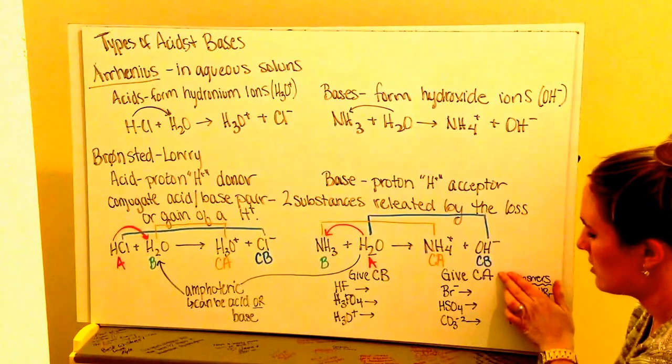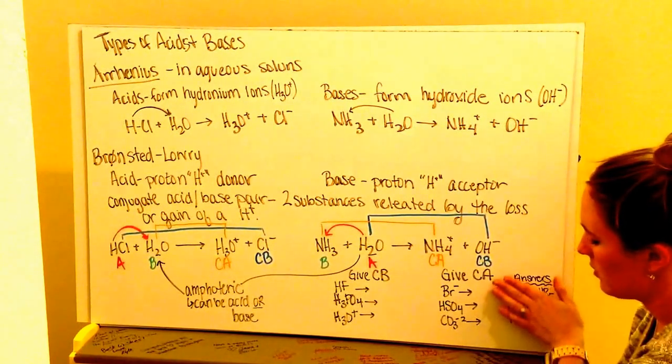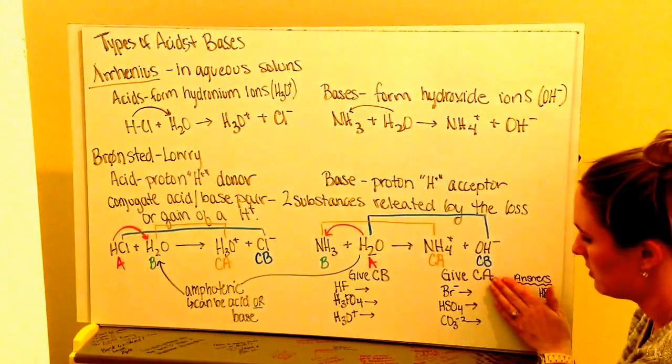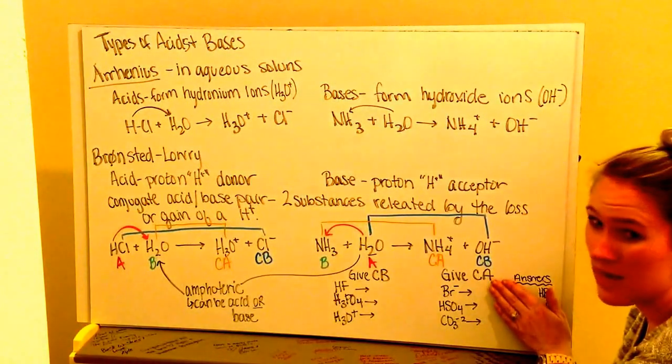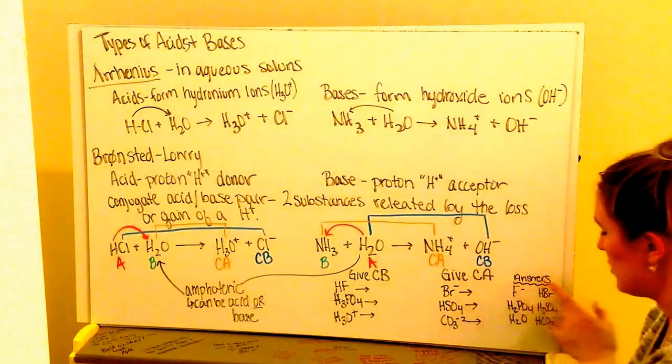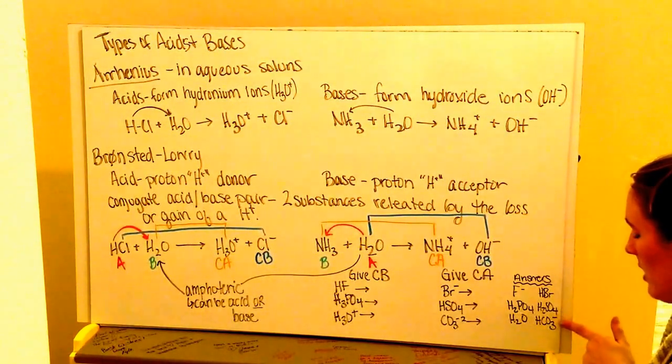Next, go ahead and give the conjugate acid for Br-, HSO4-, and CO3 2-. Once you've done that, go ahead and give their names. You should have got HBr, H2SO4, and HCO3-.